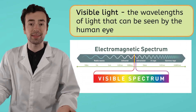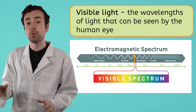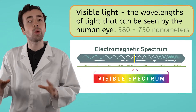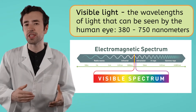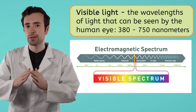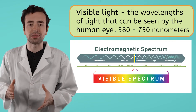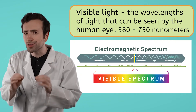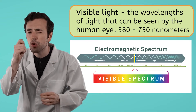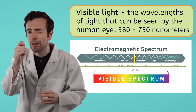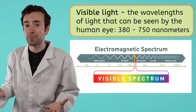Visible light is what we call the light that can be seen by the human eye. Human eyes can perceive light waves with wavelengths between 380 and 750 nanometers. That whole range is incredibly tiny — we are talking hundreds of times smaller than the width of one human hair. And yet, it contains all the colors of the rainbow.